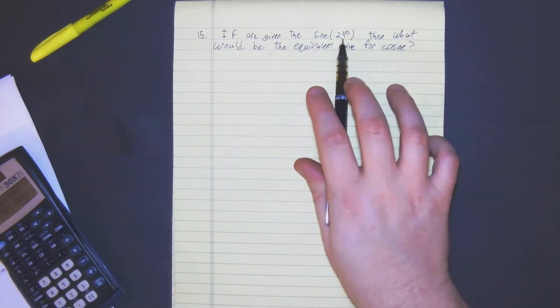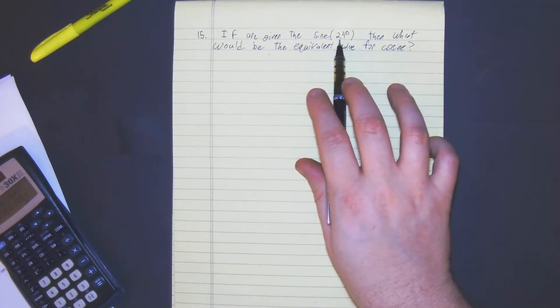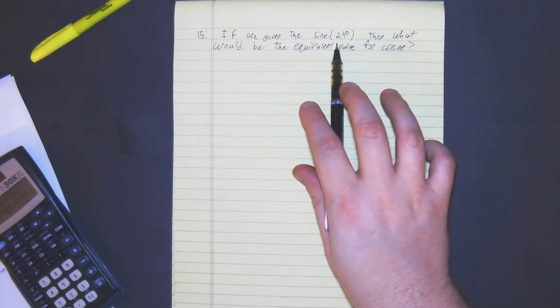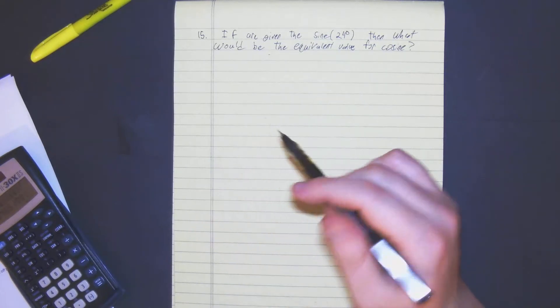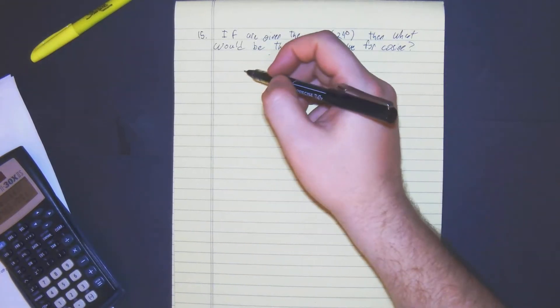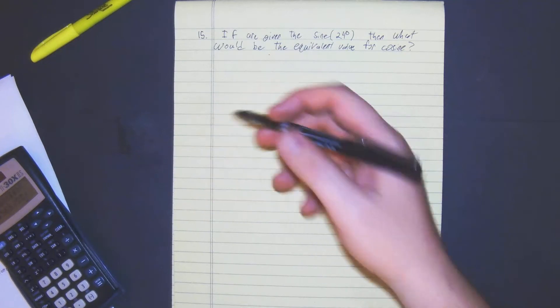So basically, whatever sine is, the complement value for cosine means that they're equal. So in other words, complement means the complementary means 90 degrees.